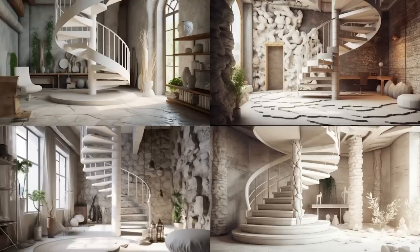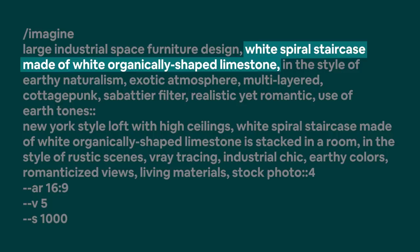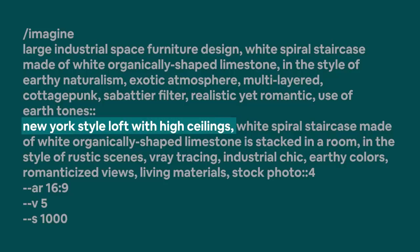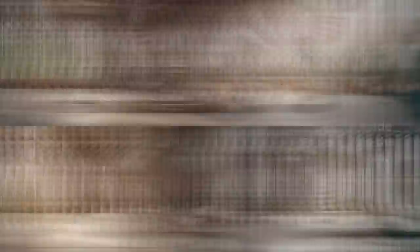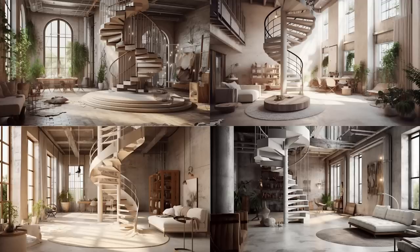While this produces extremely interesting and aesthetic results, it's clear we've distanced ourselves from the New York style loft. So I tried one more thing — on a hunch, I added 'white spiral staircase made of white organically shaped limestone' to the first segment and 'New York style loft with high ceilings' to the second. I also added the stylize parameter at 1000 for more creative results. While not perfect, I'm actually quite happy — it definitely looks more like a loft now, and the staircase is very white.